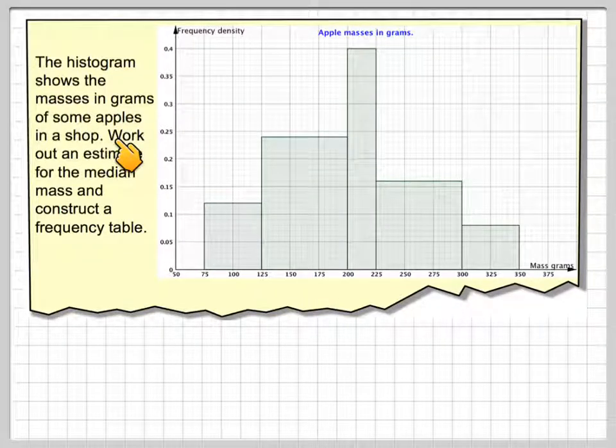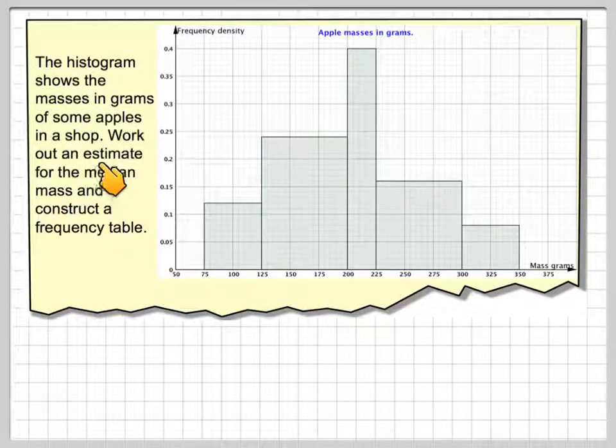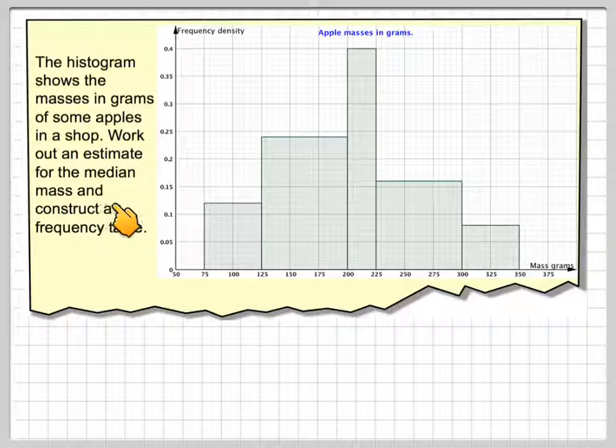The histogram shows the masses in grams of some apples in a shop. Work out an estimate for the median mass and construct a frequency table.